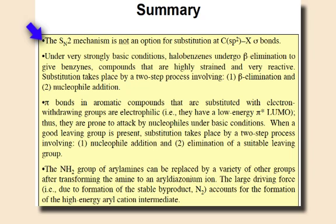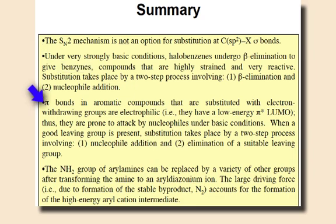In this lesson, we are reminded that substitution of sp2 carbons does not proceed through an SN2 pathway. However, nucleophilic aromatic substitution pathways can afford substitution at aromatic carbons. These are elimination-addition pathways that proceed through a benzyne intermediate. Additionally, there is an addition-elimination pathway that is facilitated by electron-withdrawing groups at the ortho and para positions of the benzene ring. Finally, we learned that aryl amines can be converted to aryl diazonium ions that allow access to a wide variety of substituted benzenes.